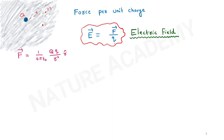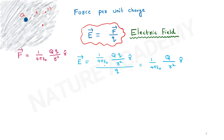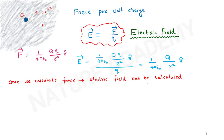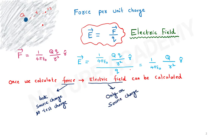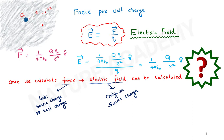So E-bar equals 1 over 4π epsilon-naught times Q over r-squared times r-cap. In the force formula, both source charge and test charge are present, but in the electric field formula only the source charge appears — there is no test charge. This is an important distinction. There is also an interview question here.